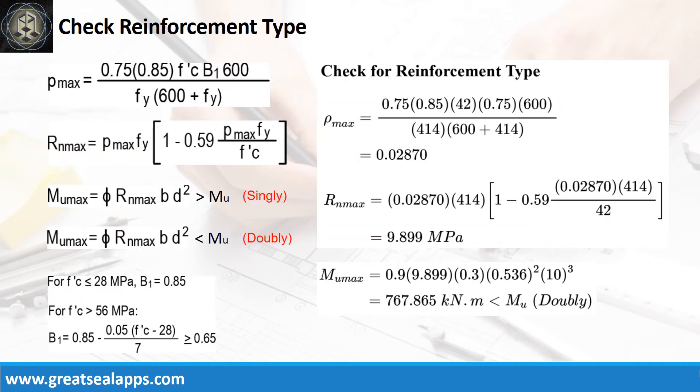The rho max from given design load is 0.287, then RN max is 9.899 MPa, and finally, the MU max is 767.865 kN-m, less than 808.488 kN-m, for doubly reinforced beam design.